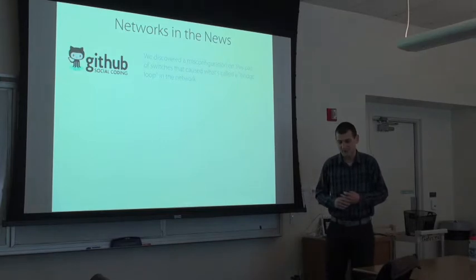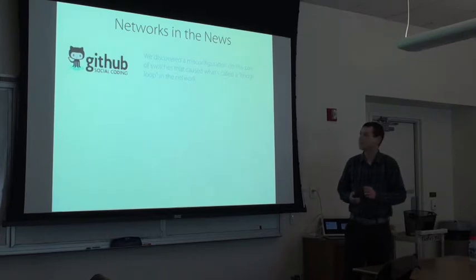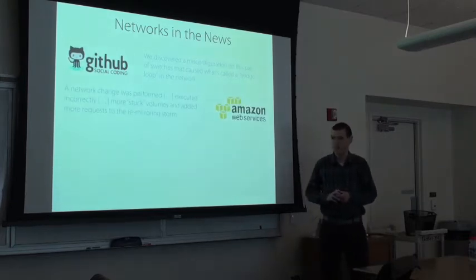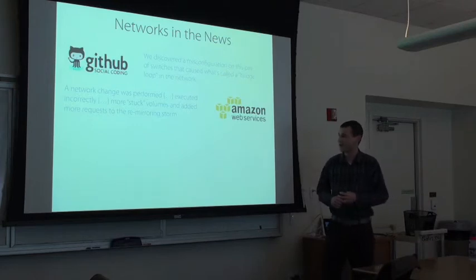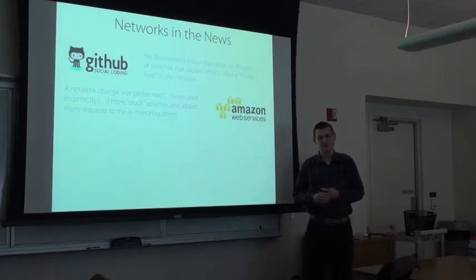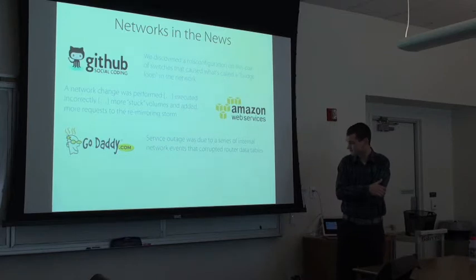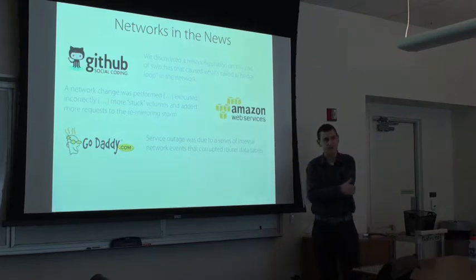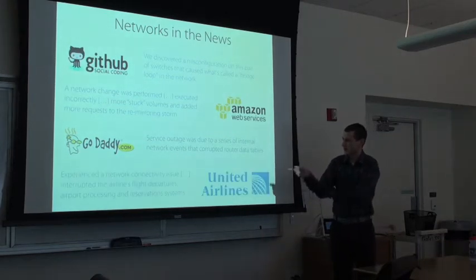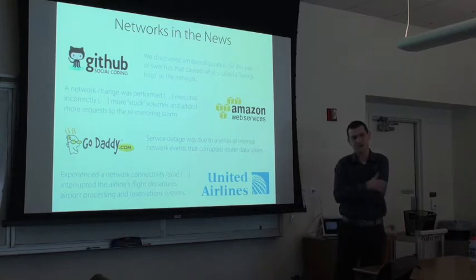GitHub — smart people building infrastructure for programmers — couldn't get a fundamental configuration right. There was another infamous example at Amazon: they were trying to implement a routine maintenance task, made a mistake, shifted a bunch of network traffic onto a backup network, and this triggered cascading failures that eventually took out their whole East Coast data center. GoDaddy had a similar internal network event that led to corrupted router tables and an outage taking out their DNS service. My favorite example: United Airlines, about two years ago, had connectivity issues that caused their flight system to become unavailable and led to a full ground stop at SFO.